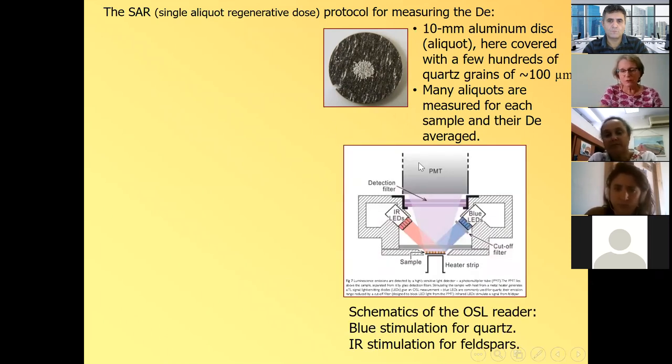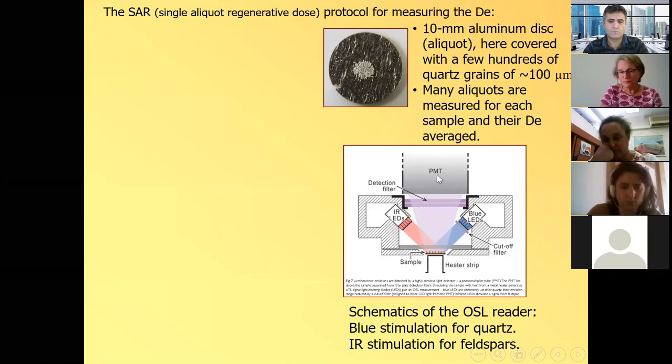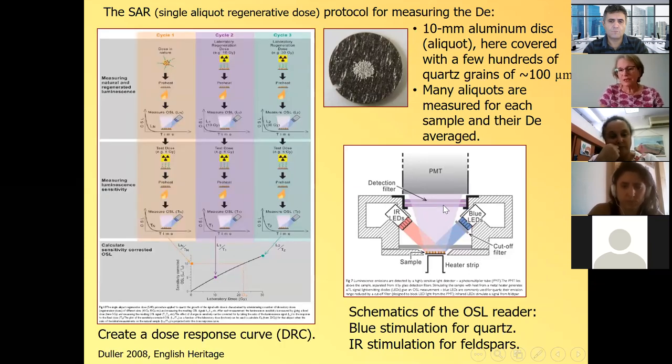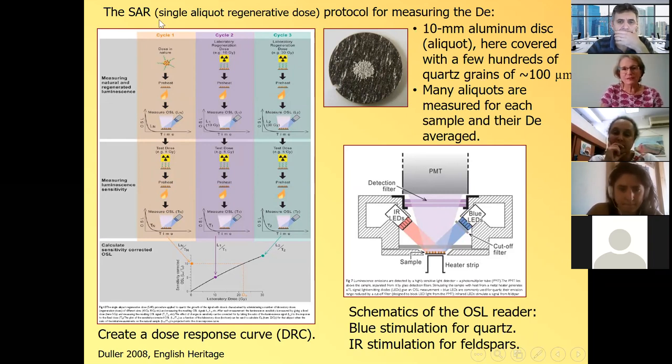And this is what we measure. And for each sample, we measure many such aliquots. And here is the luminescence reader, how we measure the signal. So here is this aliquot sitting with the quartz grains, and there's a hot plate. I'll talk about the heating in a minute. And we can either shine blue light on it for quartz or shine infrared on it for feldspars. The light that the sample emits, which is the luminescence signal is measured by the PM tube.